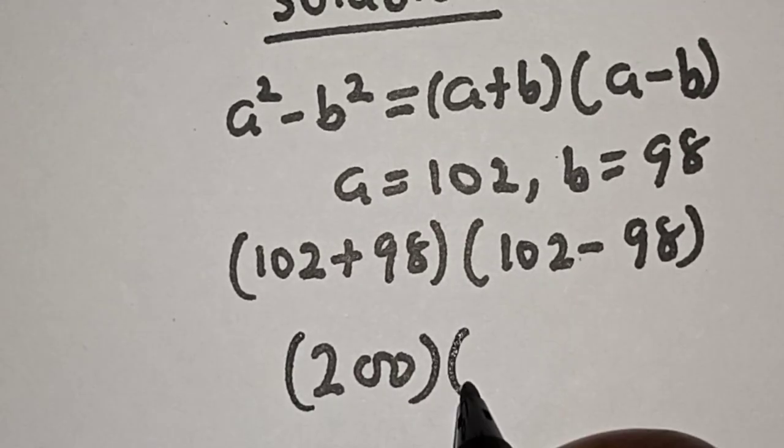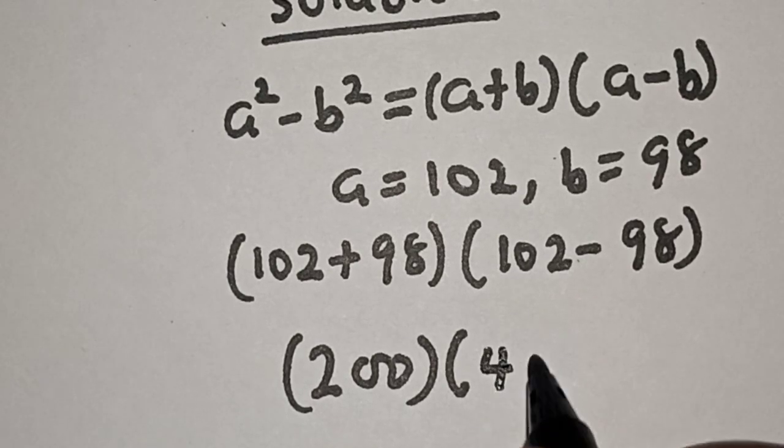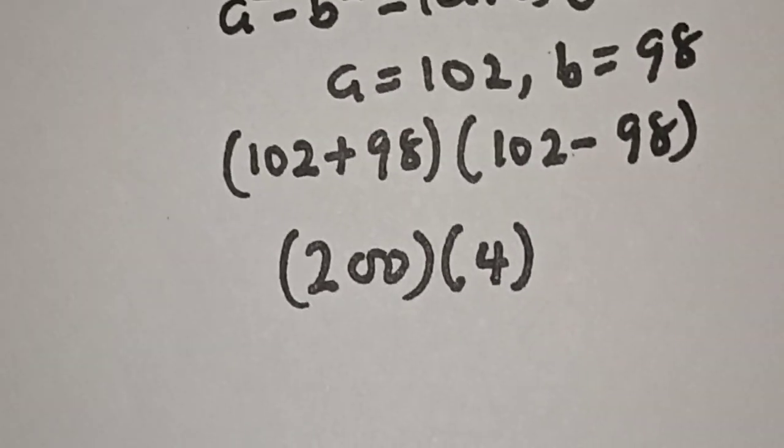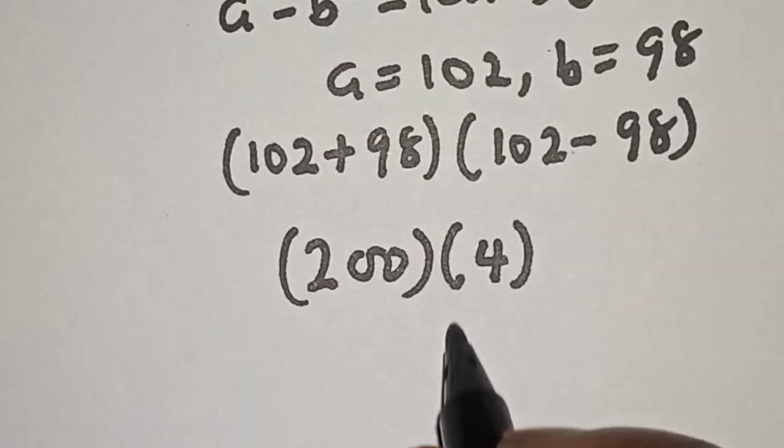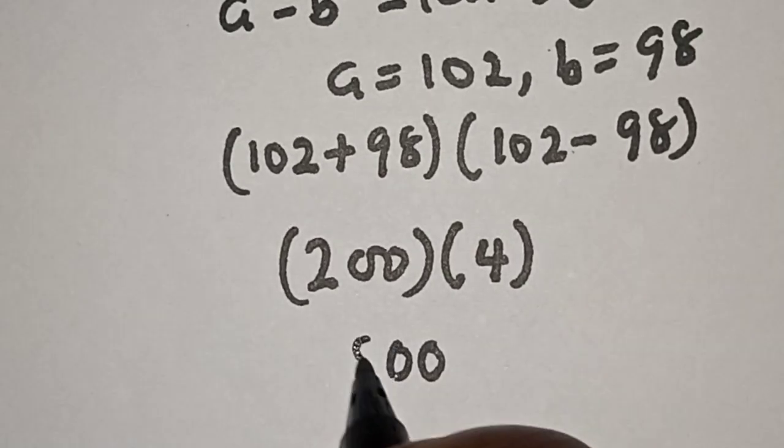Then let's multiply out: 200 multiplied by 4. 4 times 0 is 0, 4 times 0 is 0, 4 times 2 is 8. This gives us 800.